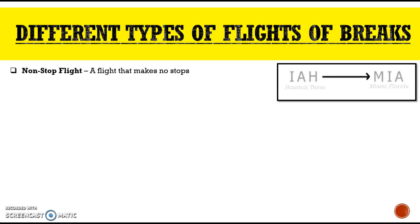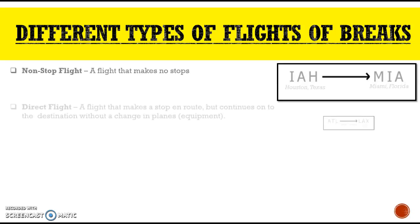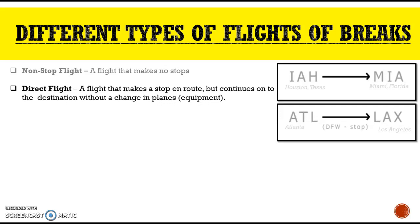A non-stop flight makes no stops. For example, Houston, Texas going to Miami, Florida — that is a non-stop flight. The direct flight, also called the wreck flight, makes a stop en route but continues on to the destination without changing planes.